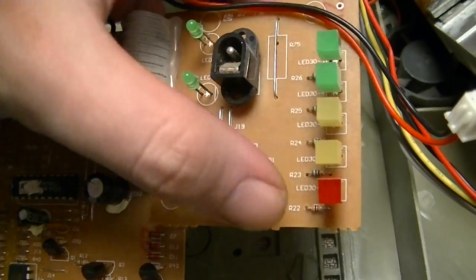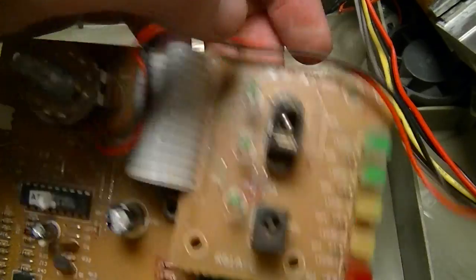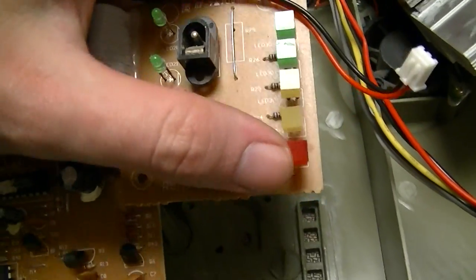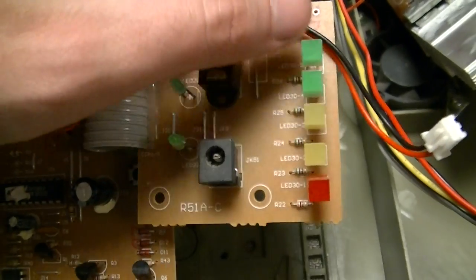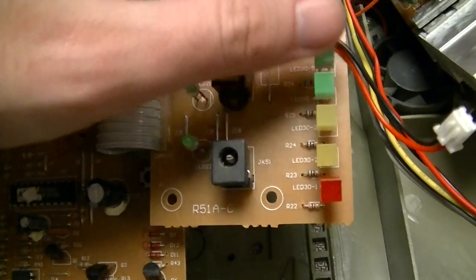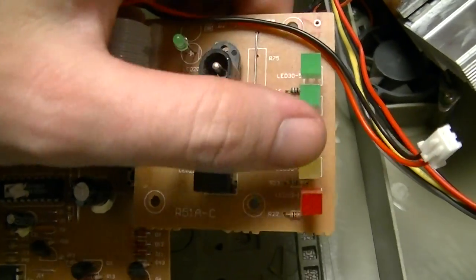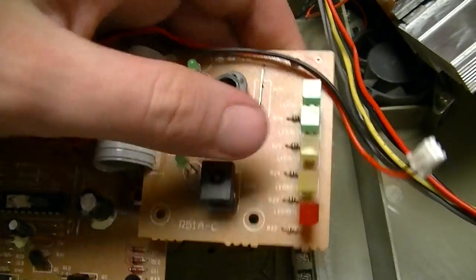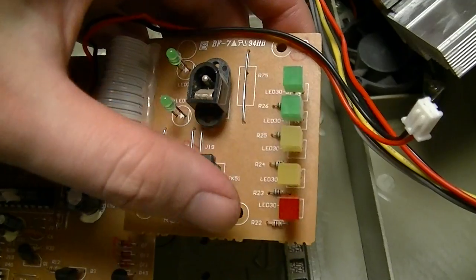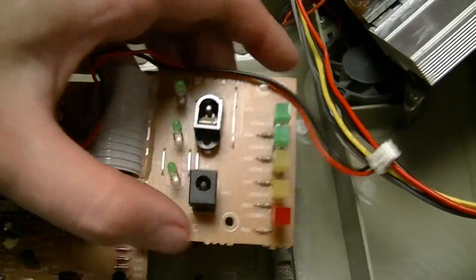it can output either 3 volts, 4.5 volts, 6 volts, 9 volts or 12 volts, which are indicated by this series of LEDs which also double as the charge level indicator in the internal battery.